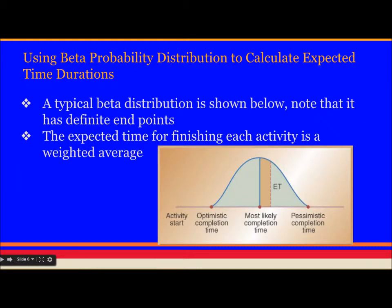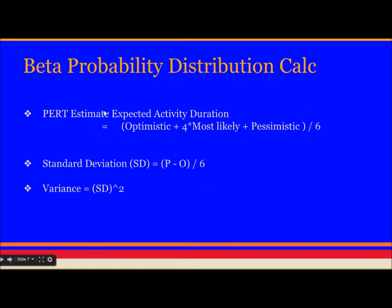Using beta probability distribution to calculate expected time duration. A typical beta duration is shown below. Note that it has definite end points. The expected time for finishing each activity is the weighted average. How do we calculate the weighted average? Here is the formula. PERT estimate expected activity duration is calculated as Optimistic plus 4 times most likely plus pessimistic divided by 6. Standard deviation is calculated as Pessimistic minus optimistic divided by 6. And variance is calculated as standard deviation whole square.